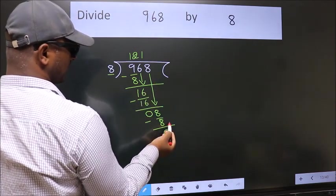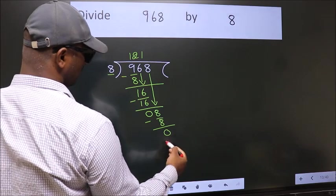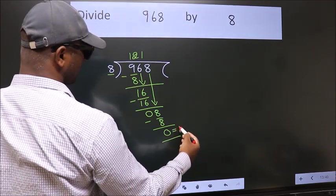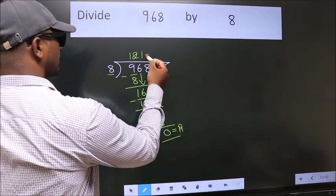No more numbers to bring down. So we stop here. This is our remainder. This is our quotient.